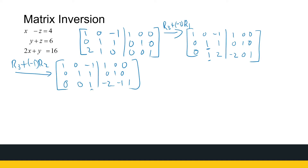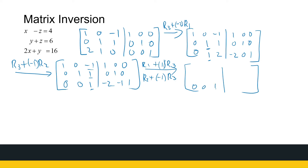Now we have our third leading one. We need zeros above it, so we do two steps at once: take row one and add one times row three to it, and take row two and add minus one times row three to it. Row three stays the same: zero, zero, one, minus two, minus one, one. Row one becomes: one, zero, zero, minus one, minus one, one. Row two becomes: zero, one, zero; adding minus one times row three gives two, two, minus one. So we've got our inverse on the right-hand side.